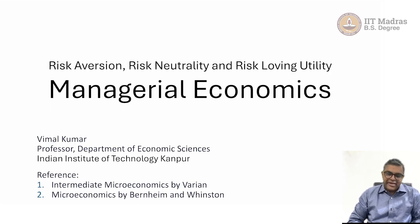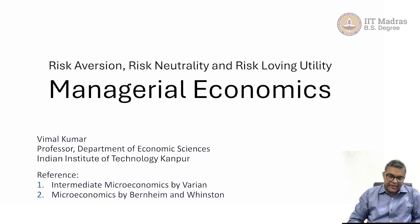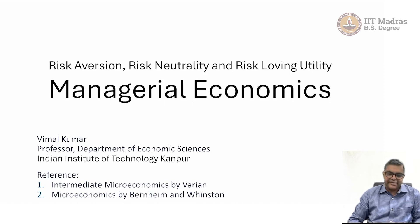Welcome back. We are studying risk and uncertainty. We have learned what we mean by risk, what we mean by uncertainty, and we have also learned about expected utility. Now in this video we are going to compare different kinds of people and decision makers we find in society: risk averse entities, risk neutral entities, and risk loving entities. Let us begin with an example.